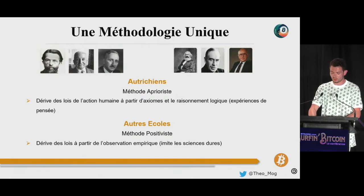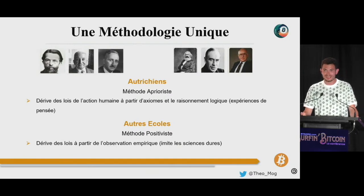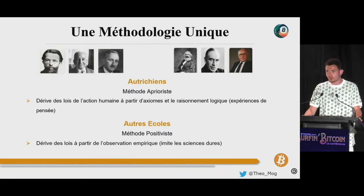Avec la méthode a prioriste, on ne peut pas faire des prévisions précises sur le futur. On peut tout au plus faire des prévisions qualitatives du type : si on fait ça, il risque de se passer ça. Mais on a un grand degré de certitude dans les prédictions qu'on fait. À l'inverse, avec les méthodes positivistes, on peut prétendre prévoir le PIB français à 4 ans, avec la seule garantie d'avoir autant de résultats que de modèles. C'est un peu dommage quand on connaît l'influence que les économistes ont sur les politiques publiques.